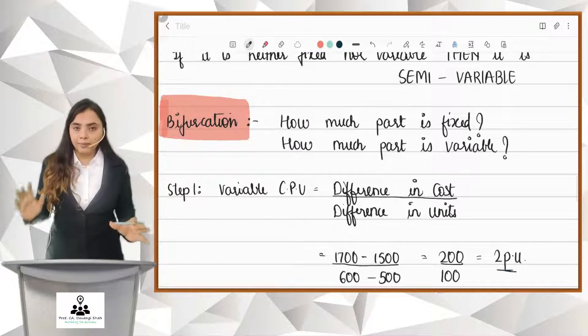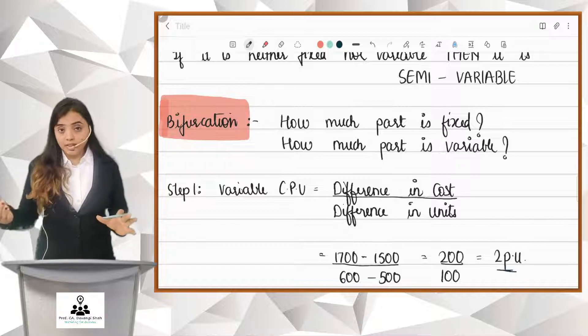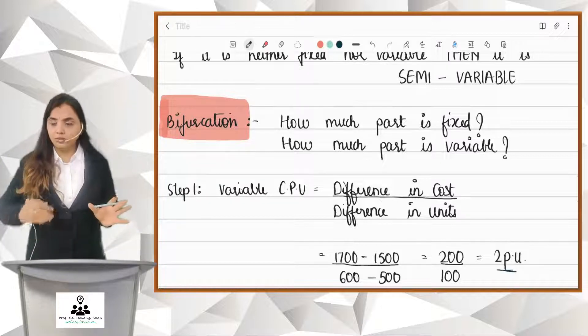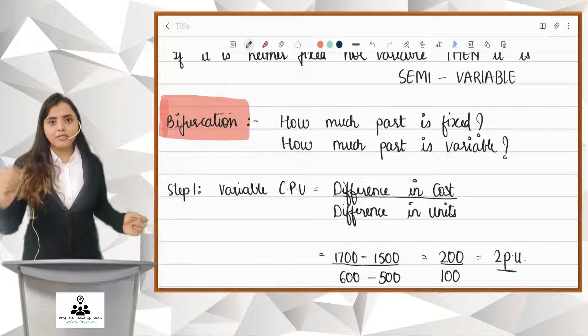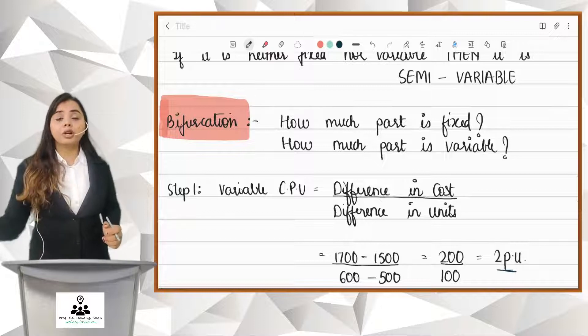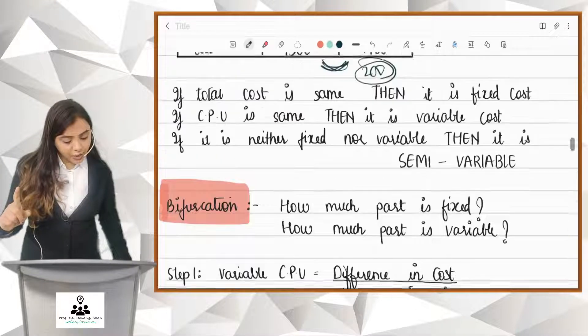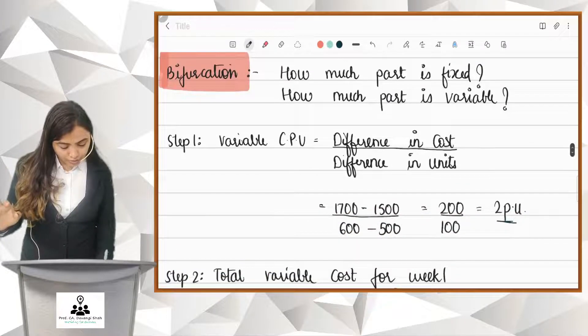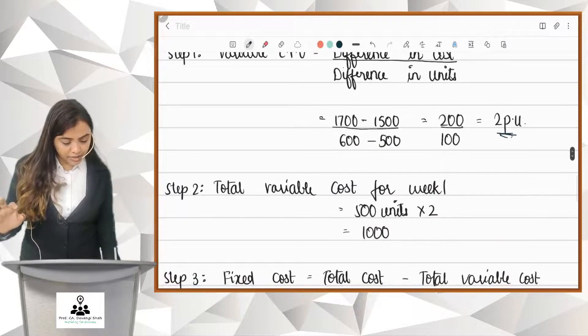Now, once you get the variable per unit, there are two more steps. What you have to do is, take any one week under consideration. You can take 1 or 2, whatever you want. I have considered week 1. Using week 1 as a base, now find out the total variable cost for week 1. In week 1, I produce 500 units. So, 500 into 2, I get the total variable cost as 1000.